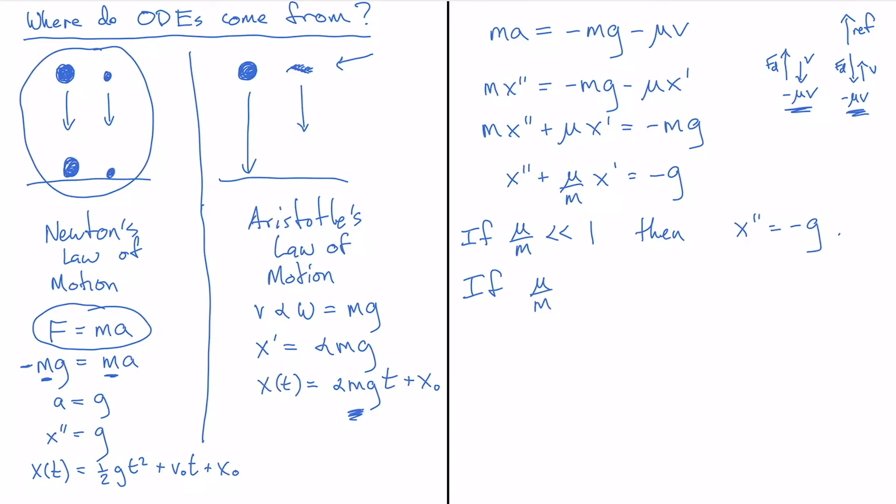And then if mu over m is, it's a little subtle how I write this, I'm going to write it as much bigger than one. In other words, it's a large number, but there's a more formal or careful way of doing these approximations that I won't talk about here. Then we get that the x double prime term has a very small coefficient relative to this one. And you can multiply through by m over mu to sort of see that come out. But what you end up with is x prime is equal to minus mg over mu.